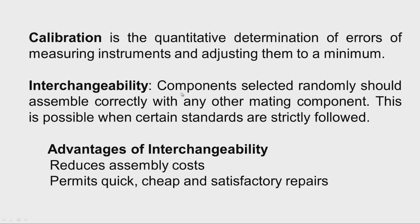Interchangeability means that components selected randomly should assemble correctly with any other mating component. This is possible when certain standards are strictly followed. Due to mass production, mating parts are made at different places by different operators, and when we try to mate them by selecting randomly, they will mate easily without any individual fitting operation. This process is known as interchangeability and is possible only when standard instruments and measuring methods are used.